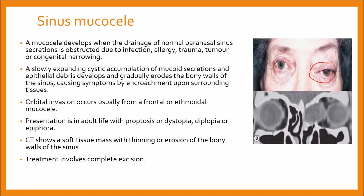Here you can see a mucocele coming from the ethmoidal sinuses, present here and involving the orbit, causing indentation of the medial rectus.